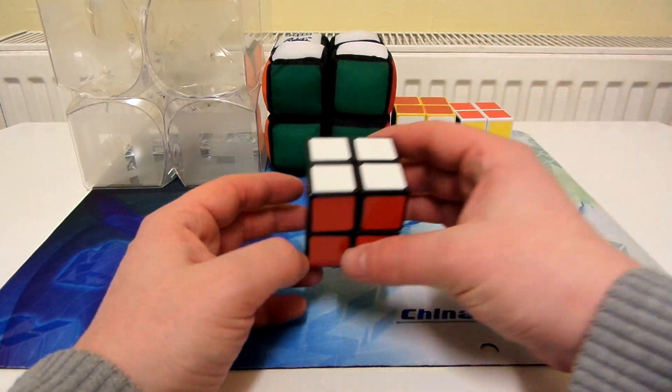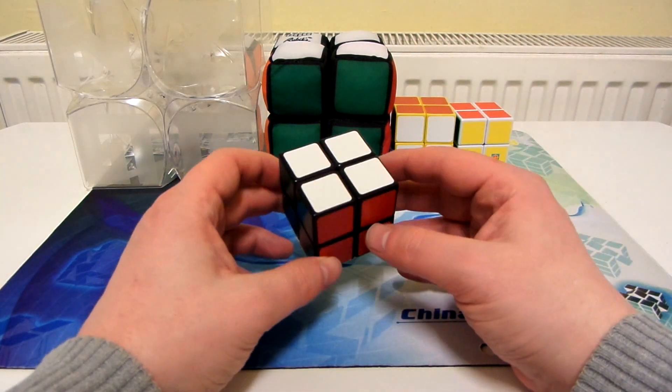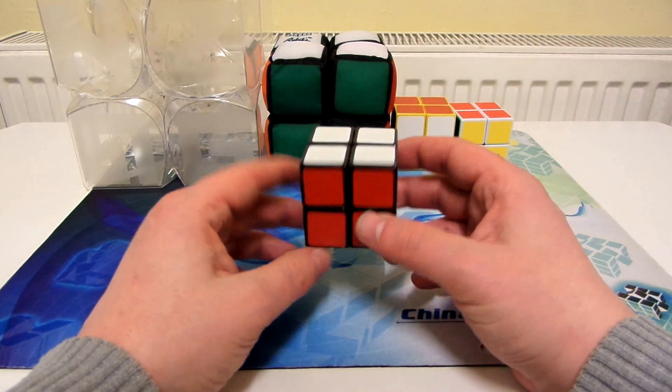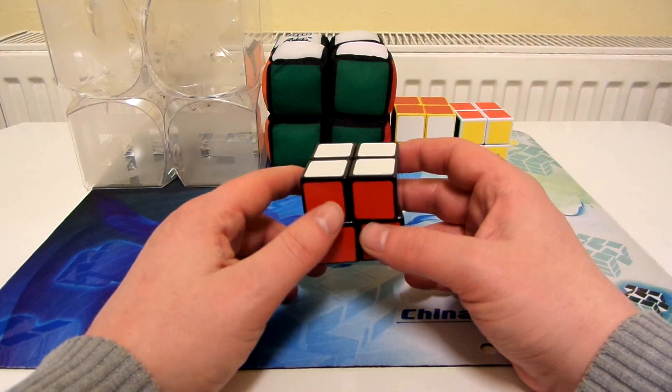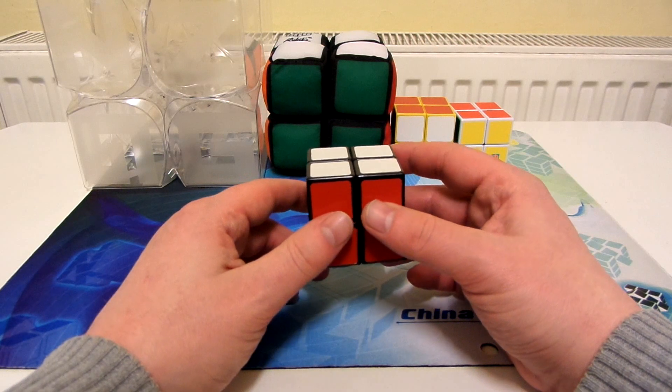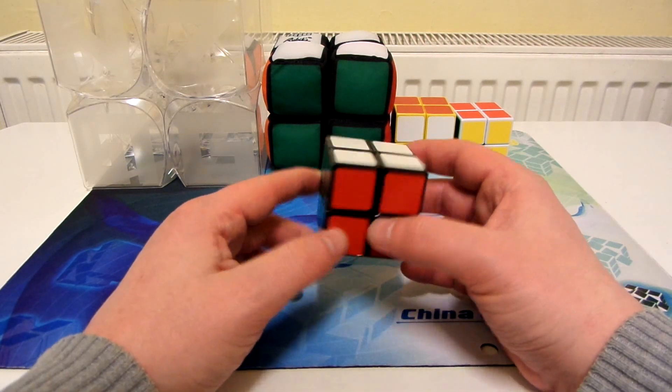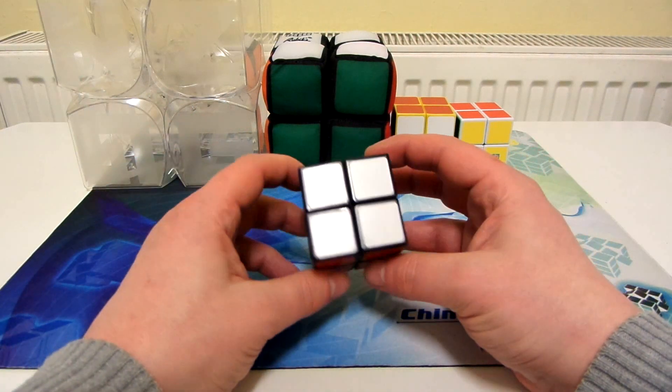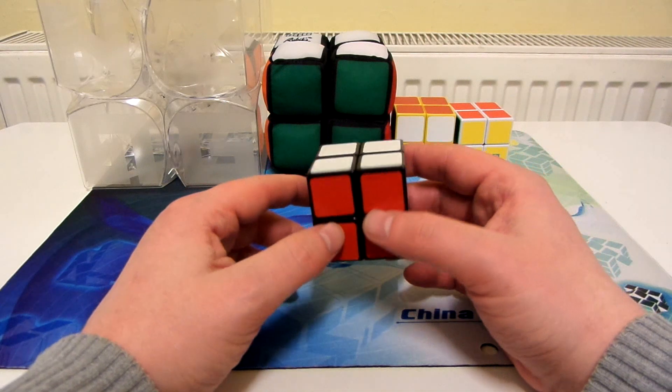Next up is this Lamlon 2x2. Now, in the late 2000s, I wanted to get a 2x2, and I thought, well, I'll just get the best one, so I think I asked on a forum. I can't remember what the name of the forum is. I think it might be speedsolving.com or something. I asked what's the best 2x2, and a few people told me the Lamlon 2x2, so I ended up buying it.